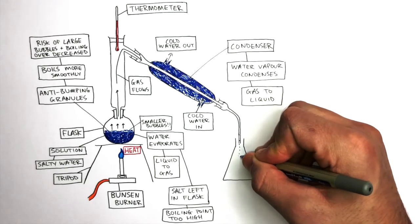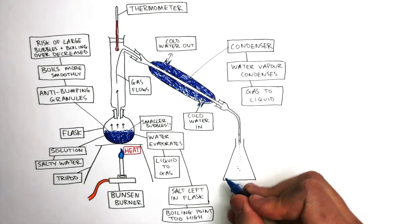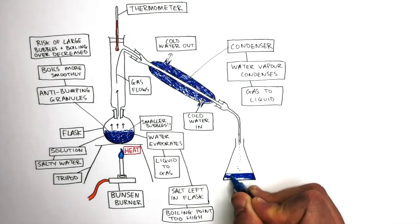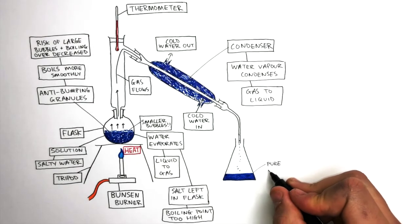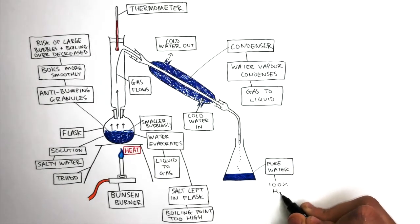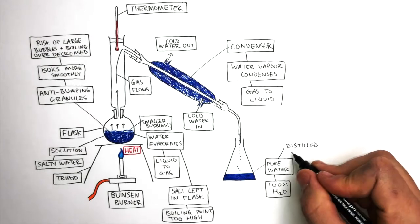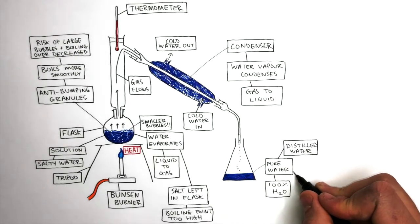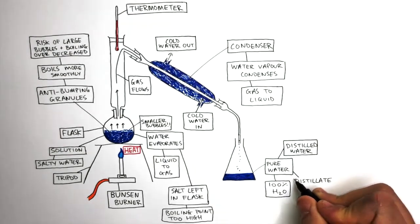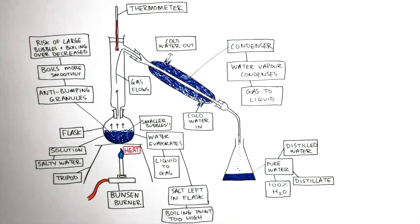The final result is water droplets dripping into the conical flask as a colorless liquid. You'll see pure water, 100% water, also known as distilled water. And there's also a general term which is the distillate, which means the liquid formed from the distillation of a mixture.